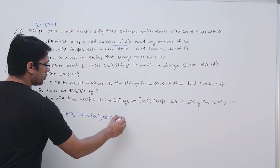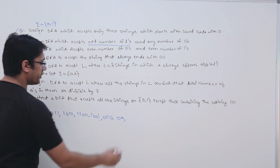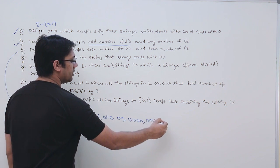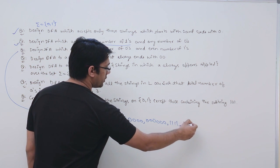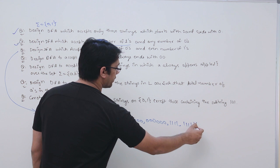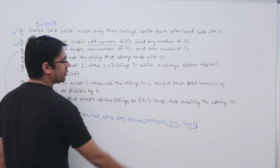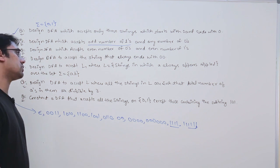We can have two zeros because number of ones are even and number of zeros are also even. We can have four zeros, we can have six zeros. In the same way we can have even ones. The number of zeros here are 0 and number of ones are even. So number of zeros and number of ones are independent of each other, but both should be even.